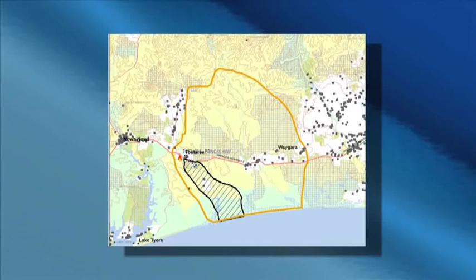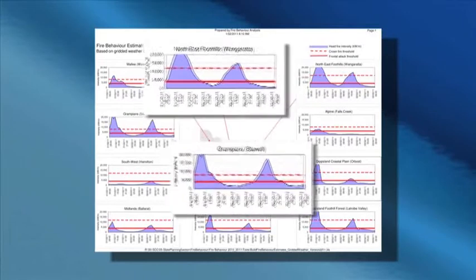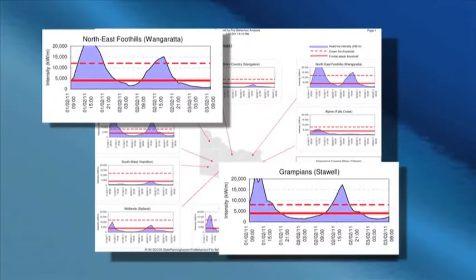These maps are often used for media warning generation and publication in newspapers. The fire behaviour estimates report is produced daily during the fire season. This report estimates the fire line intensity every hour for the next two hours for a selected set of localities across the state. This report can be found on the fire weather page of FireWeb. A similar product is produced for planned burning and can also be found on the fire weather page.